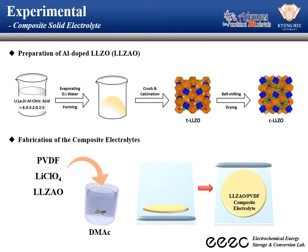This is the experimental method. Aluminum LRGO was synthesized by the sol-gel method, and cubic structure LRGO was synthesized using a ball mill method. In order to fabricate the composite electrolyte, PVDF as polymer, lithium perchlorate as lithium salt, and LRGO particles were added to a DMAC solvent, mixed well, and then cast on a glass plate, then dried in a vacuum oven.